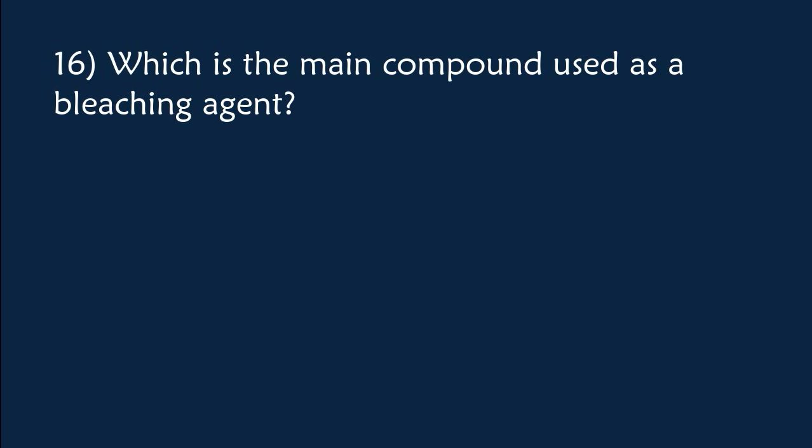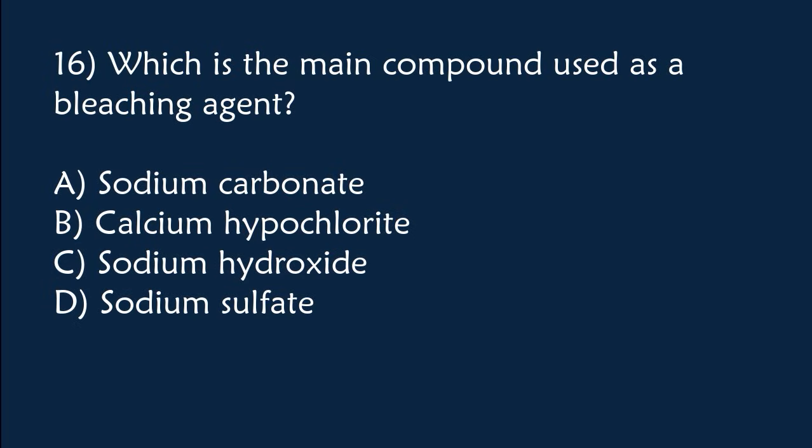Which is the main compound used as a bleaching agent? A) Sodium carbonate, B) Calcium hypochlorite, C) Sodium hydroxide, D) Sodium sulfate. The correct answer is Option B, calcium hypochlorite.